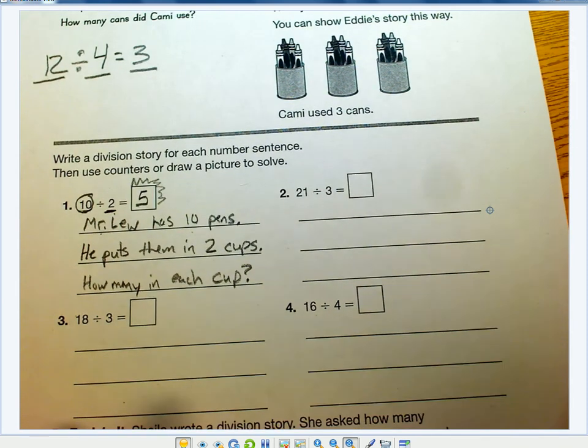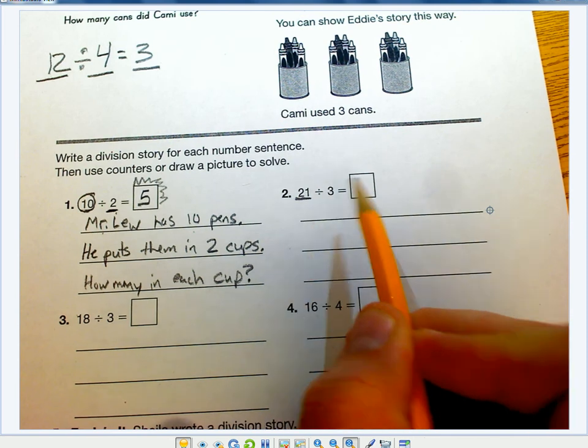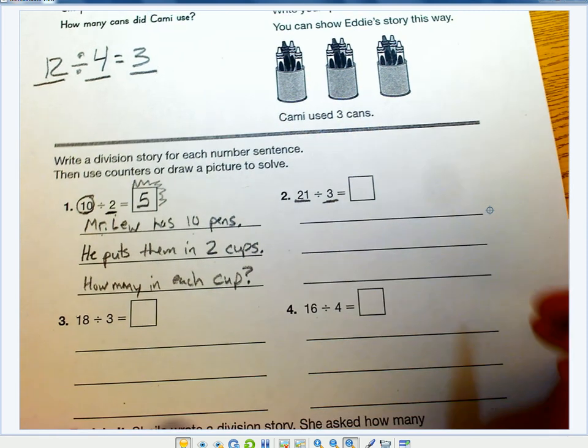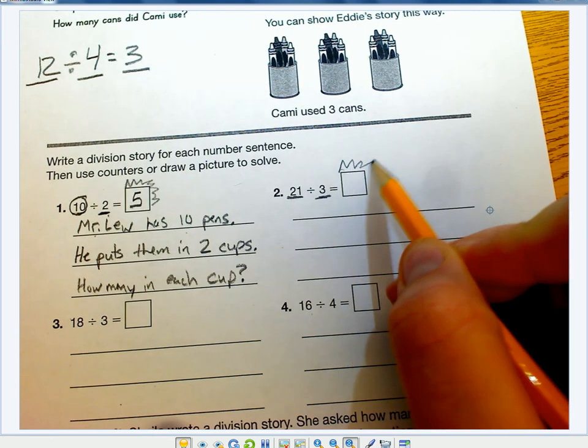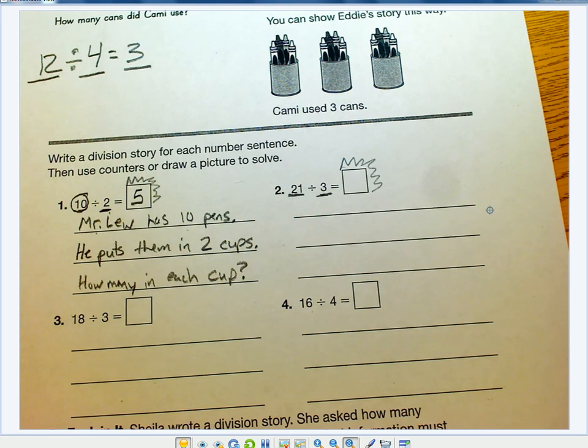Let's do another one. 21 divided by 3. 21 is going to be our total number of items. 3 is going to be our number of groups. And this unknown number is going to be our number in each group.